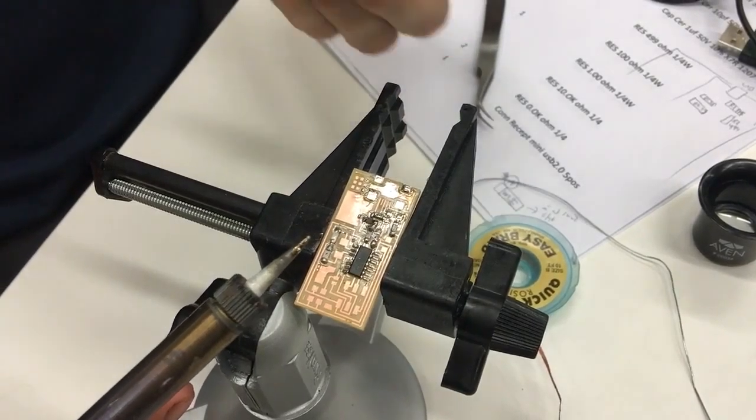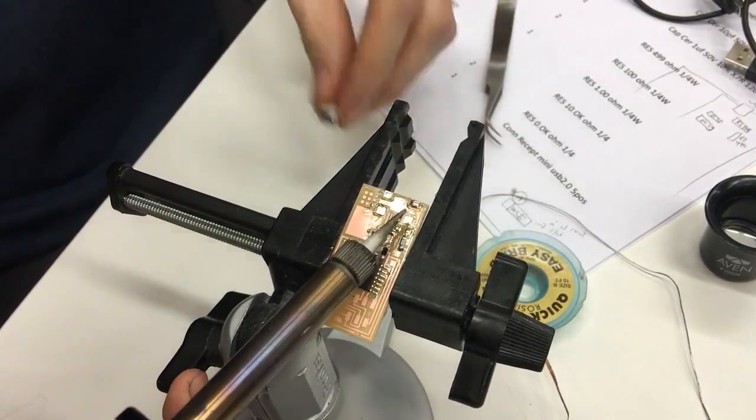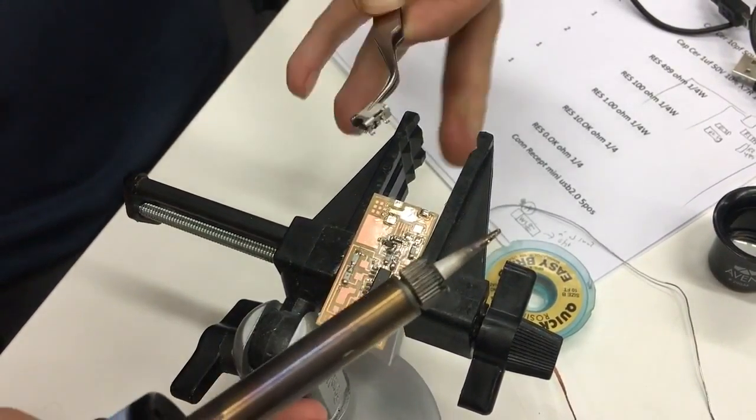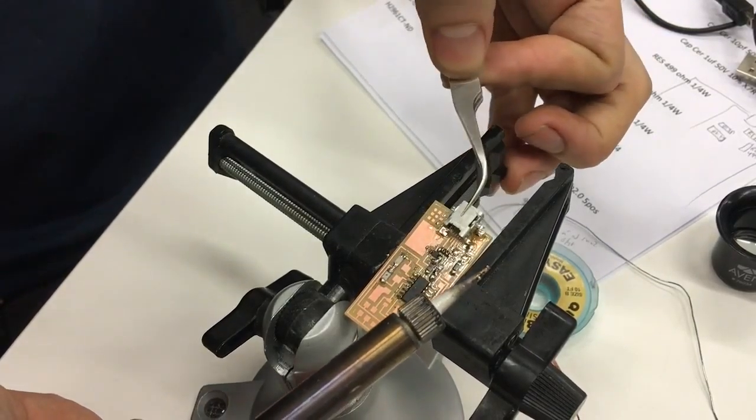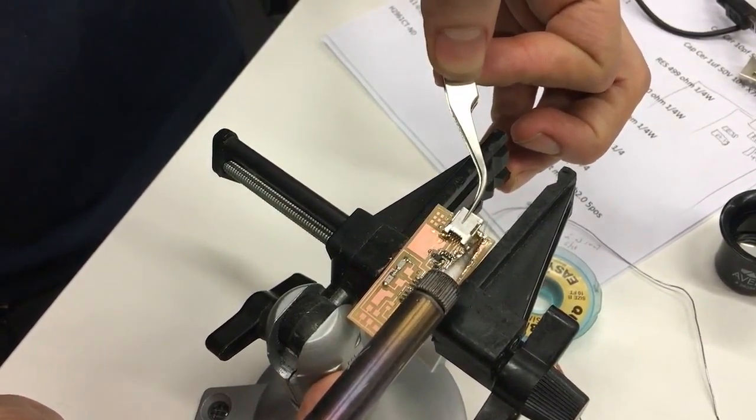What we'll do is once you get a new component, you place it with the tweezers, of course, because it's going to get hot. You place it so it aligns, heat the pad, and place one leg in there.